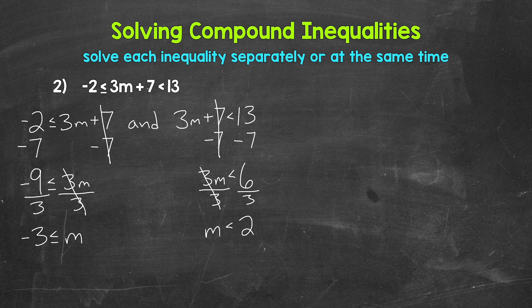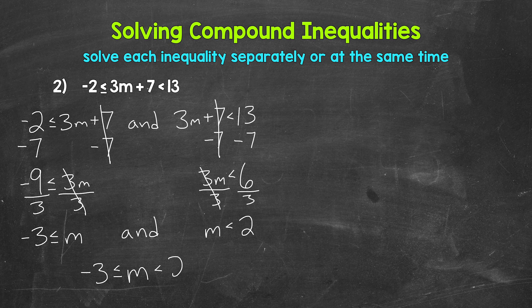So m has to be greater than or equal to negative 3 and m has to be less than 2. We can combine these and write the compound inequality without AND: m is greater than or equal to negative 3 and less than 2.